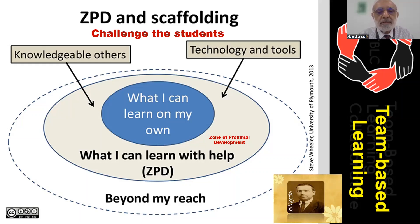First, the easiest part, which students may learn themselves, or some of them may be familiar with that part even before the session. The second is a relatively difficult part which is labelled as the zone of proximal development, and this is where teachers need to help the students to understand that content better. The third portion may be beyond the reach of the students at that particular time and stage of training.